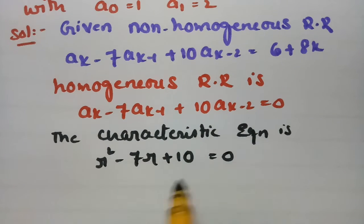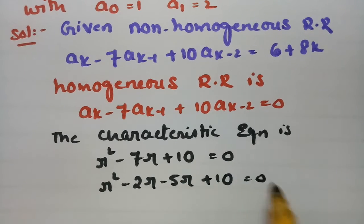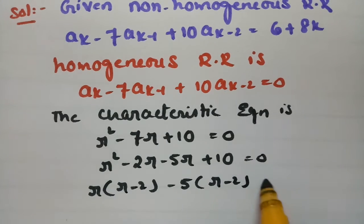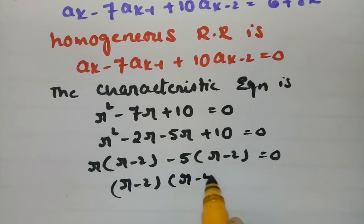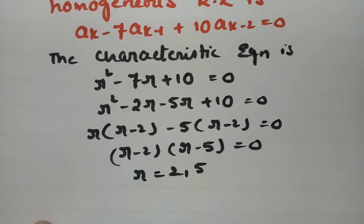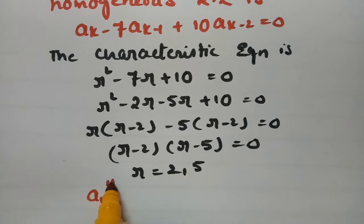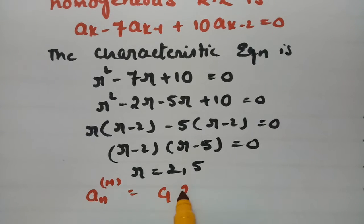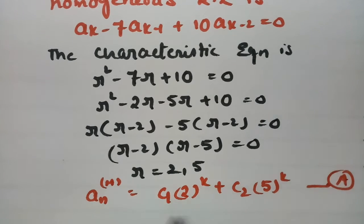Factoring: R² - 2R - 7R + 10 = 0 gives R(R - 2) - 5(R - 2) = 0, so (R - 2)(R - 5) = 0. The roots are R = 2 and R = 5. Since these are real and distinct, the homogeneous solution is An(H) = C1·2^k + C2·5^k.